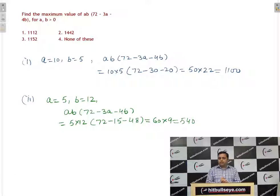I have taken here two different sets of A and B. In the first set, I have taken A to be equal to 10 and B equal to 5. And when I put these values in the given expression, the value of the expression comes out to be 1100.